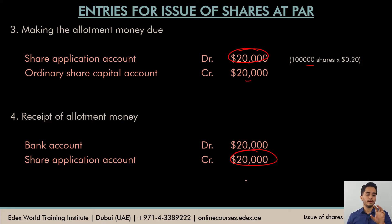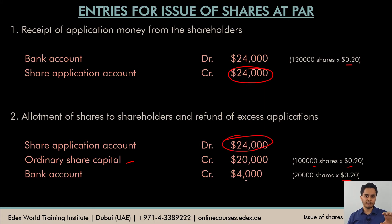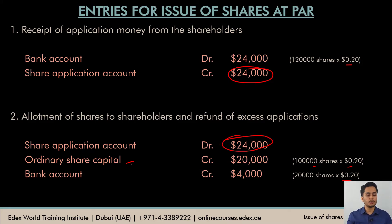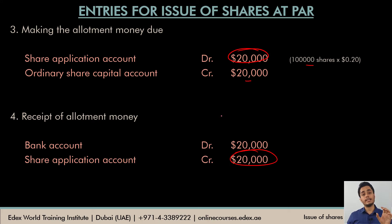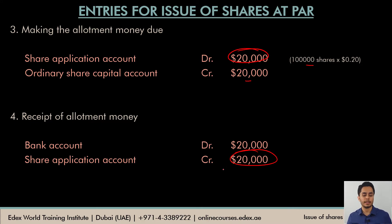There is one very important difference between the sequence of entries at application versus allotment and future calls. At the time of application, money is received first and then transferred to share capital, because the company is never sure how many applications it will receive — so it cannot credit the share capital account first. It must wait for shareholders to apply and pay. But for all future allotment and calls, you can directly credit the share capital account first, because the shareholders are confirmed and the company knows it will be receiving money from them.